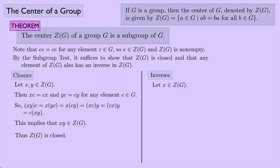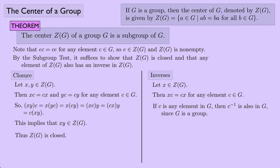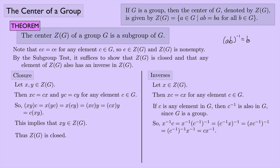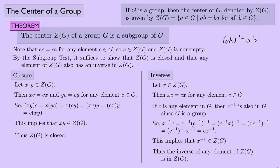For inverses: let X be an element of the center. Then X times C equals C times X for any C in G. Since C is in G, C inverse is also in G, so X times C inverse equals C inverse times X. Using the trick that A times B inverse equals B inverse times A inverse, we can turn X inverse times C into C times X inverse. This implies X inverse is in the center. So the inverse of any element of the center is also in the center, and therefore the center is a subgroup of G.